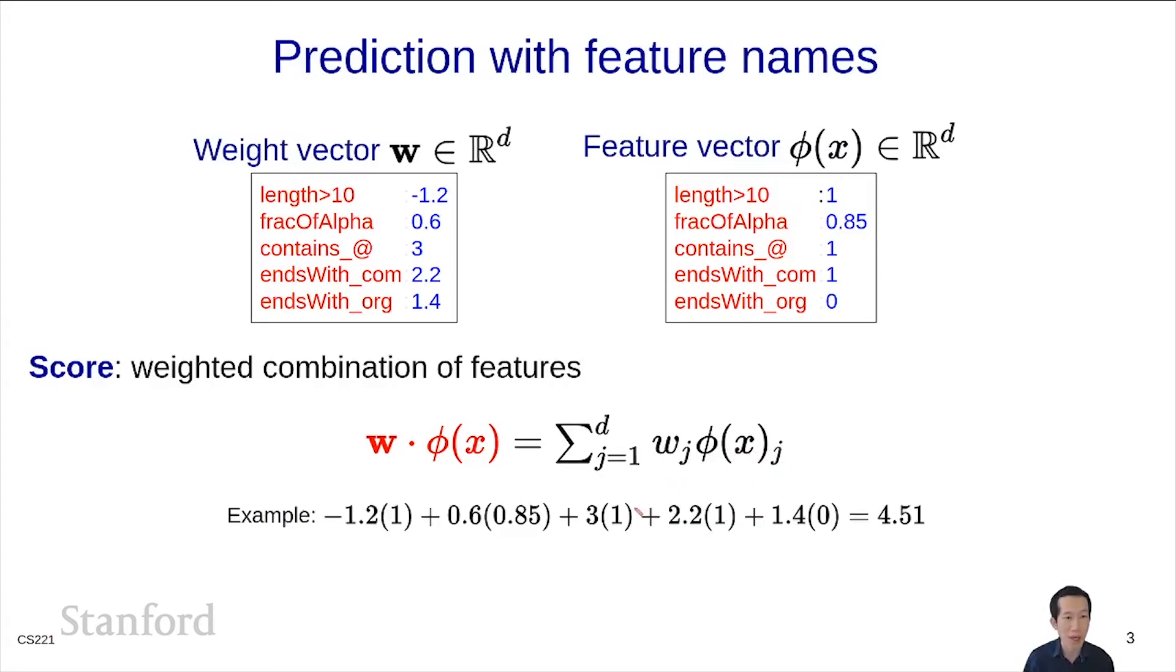Here's an example. The weight of length greater than 10 is minus 1.2. The feature value is 1. So you have that product here and you have all the other features.